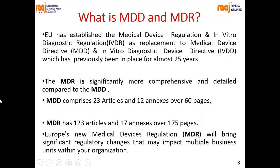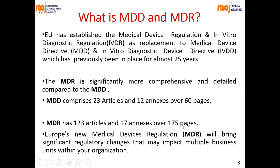How does MDD differ from MDR? The MDD is a 25-year-old regulation comprising 23 articles and 12 annexes, covering about 60 pages. Whereas the new MDR, published recently, has 123 articles and 17 annexes and comprises 175 pages. There are huge changes — from 60 to 175 pages, 12 to 17 annexes, and 23 to 123 articles. Europe's new medical devices regulations will bring significant regulatory changes impacting multiple business units.